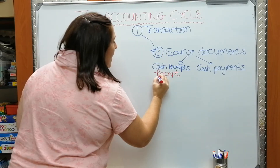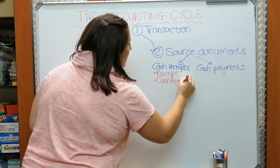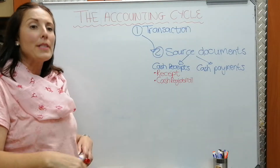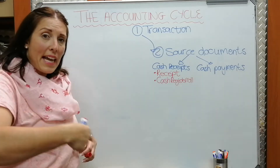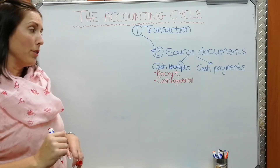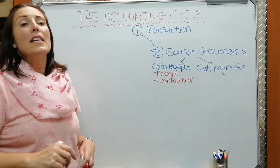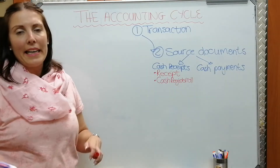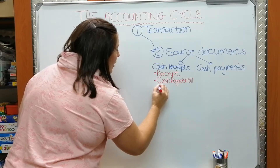When we have a till and cash register, the cash register roll is our source document. We give the till slip from the little printer to the client, and the cash register roll that stays in the printer is the document we record transactions from. In modern times, people often pay via EFT — an electronic funds transfer directly into our account — and those transactions we find on our bank statement.